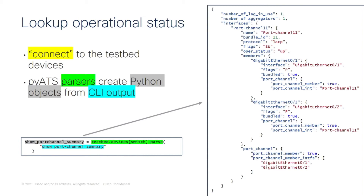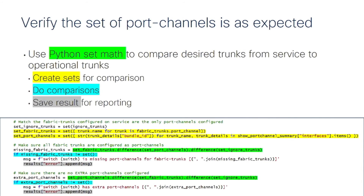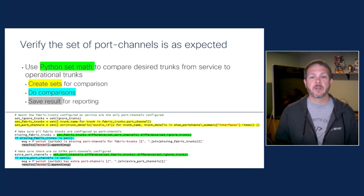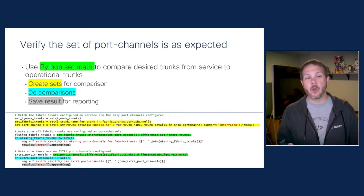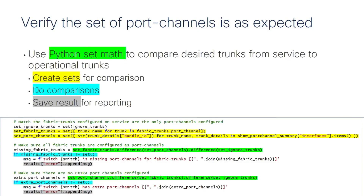With that data in place, now we can start to do the verifications. First up is the set of port channels that exist versus the ones that we expect. This allows me to use one of my favorite Python tools for this type of testing: set math. We'll use the ability to look for differences between two different sets to identify whether we have the port channels we're after, or if we have any missing or extra ones. I create two sets — the first is the set of port channels based on the configuration of our service, and the second is the set of port channels learned by running the command against our device to get the operational state. With those sets and the set math completed, we can do our comparisons to figure out whether we have any missing or extra port channels, and if we do, we'll save those results for reporting.